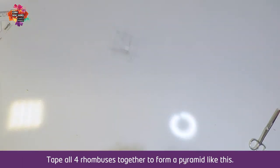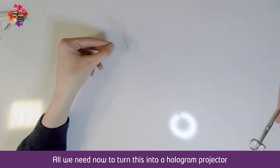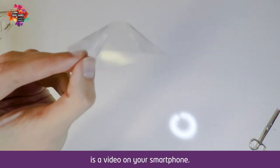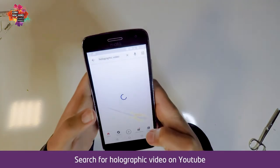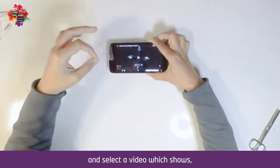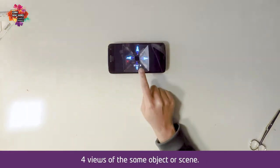All we need now to turn this into a hologram projector is a video on your smartphone. Search for holographic video on YouTube and select a video which shows four views of the same object or scene.